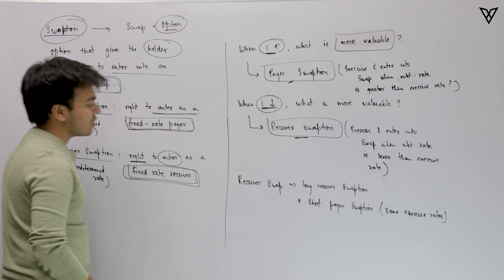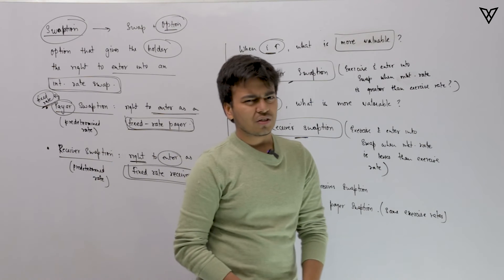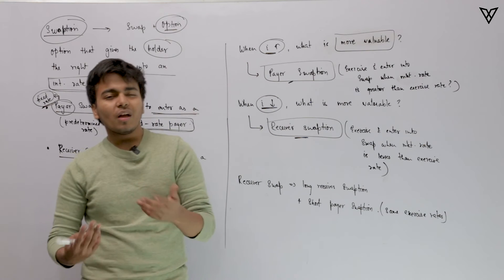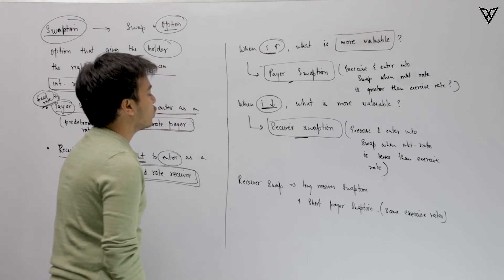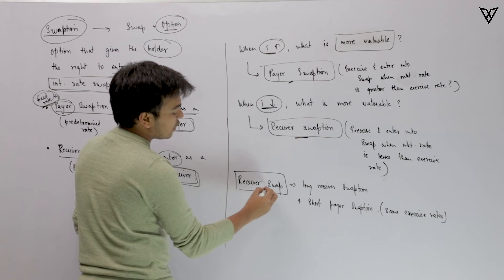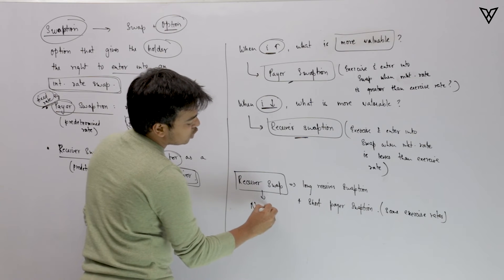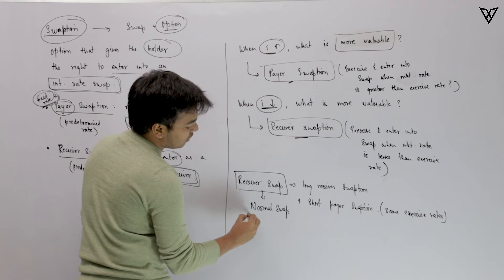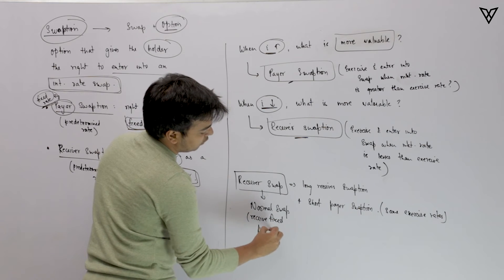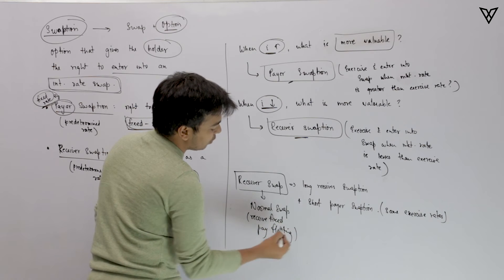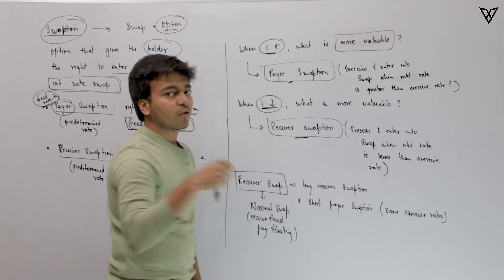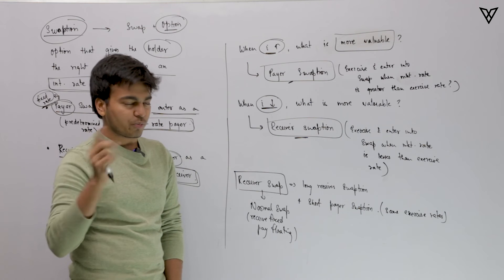That is about swaptions — both receiver swaptions and payer swaptions. There is a formula to calculate the exact value, but that has never been tested so far. Now, some replication equivalences to discuss. A receiver swap is a normal swap — not an option but an obligation — where you will be receiving fixed and paying floating. How you can replicate this: you can enter as long receiver swaption, since this is an option.